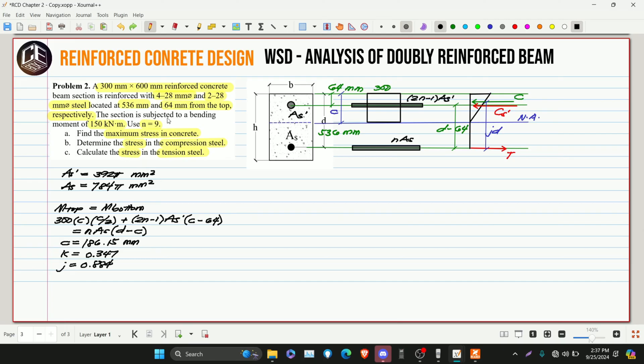So we can get these stresses. We can use our bending stress, or we can also use the factors K and J. So let's start with bending stress. Fc is equivalent to M multiplied by C over I and A. Then Fs over N. So if we cross multiply, the N goes up. So Fs is equivalent to N multiplied by M multiplied by D minus C over I and A.